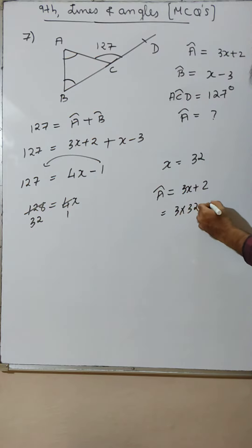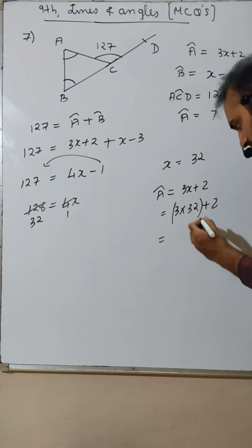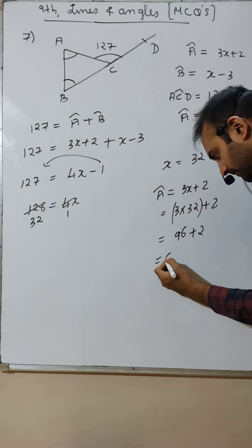3 into 32 plus 2, that is 3 into 32. 3 into 2 is 6, 3 into 3 is 9, so 96 plus 2 is 98.